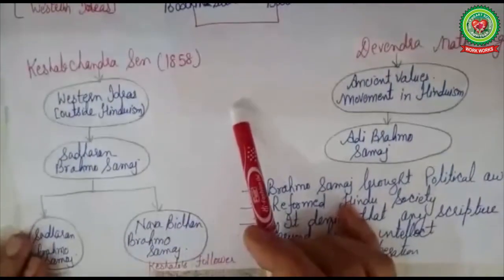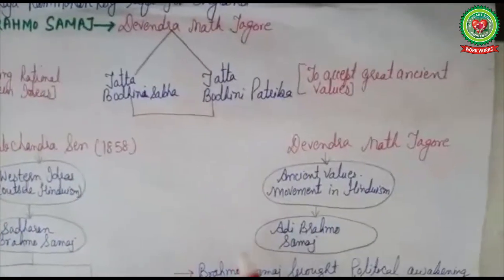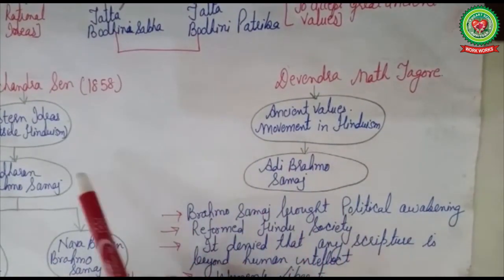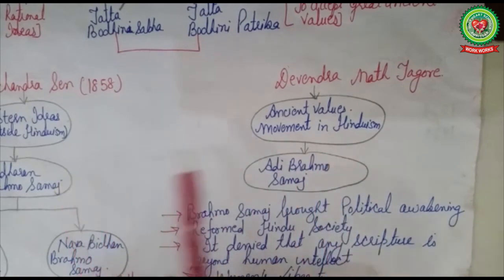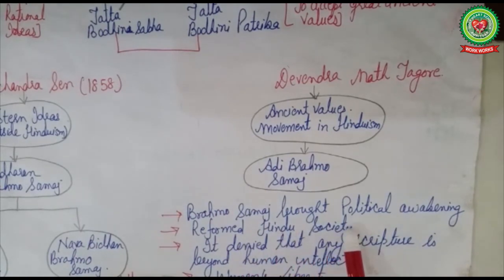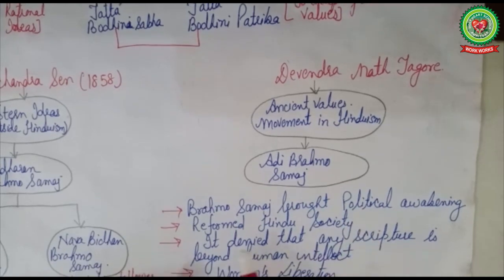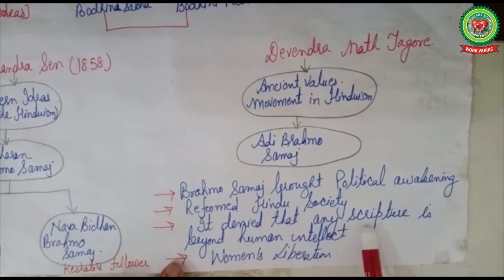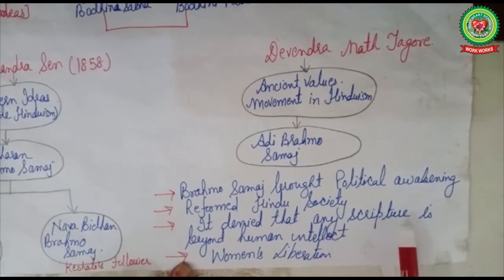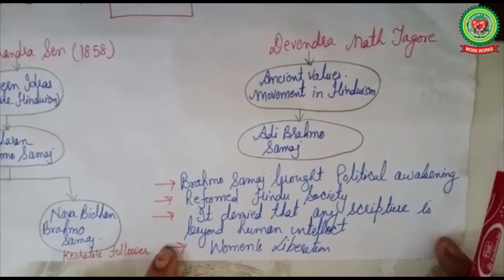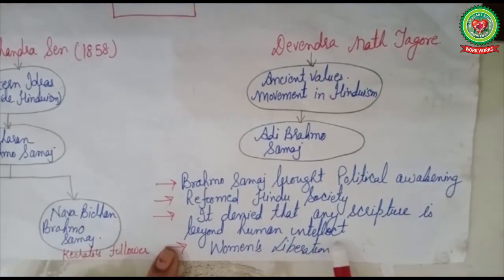Despite being divided into parts, Brahmo Samaj brought political awakening among the people and reformed Hindu society. Both sects, though separated, reformed Hindu society — they were against idol worship, criticized child marriage and the Purdah system, denied that any scripture is beyond human intellect, and believed that human reasoning is above any written religious book. Both were also in favor of women's liberation — supporting women's education and the removal of the Purdah system.